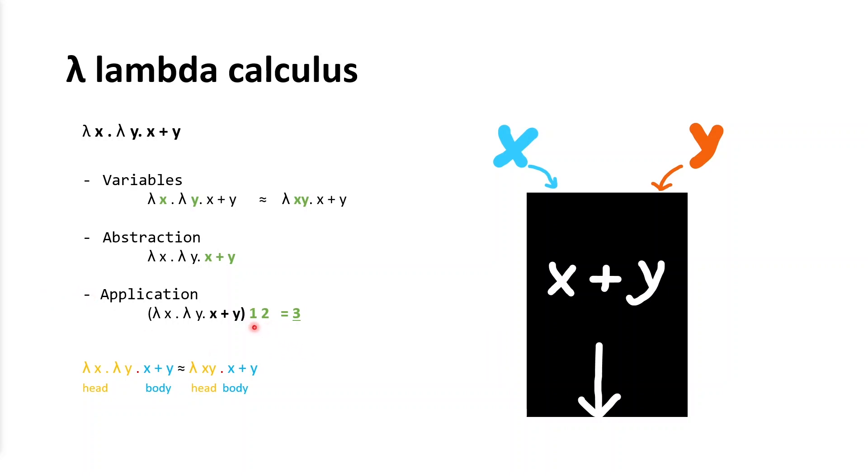When we look at this lambda expression here, variables are x and y, because they are behind lambda symbol separated by dots. After the last dot, there begins abstraction, which is adding two numbers x and y, so it's an addition function in this case. When we try to apply two numbers to this expression, for example 1 and 2, the result is 3, which is application part. Expression takes two numbers x and y, and adds these two numbers, which is our result 3.